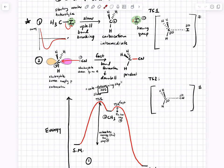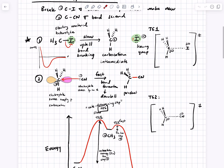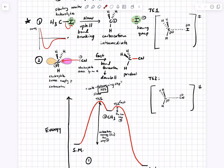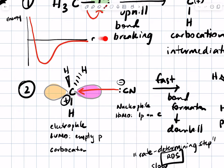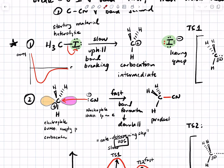We talked about how there are transition states that separate each of the starting materials, intermediates, and products. These transition states look somewhere along the way in between the starting material and the intermediate, and they're higher in energy because there's some structural rearrangement that has to happen as the atoms move along the reaction coordinate. The leaving group leaving is a matter of getting enough energy to escape this potential energy well and go to infinite distance between the carbon and the iodide.